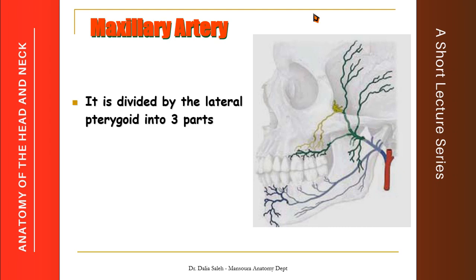Along its course, the maxillary artery is divided by the lateral pterygoid muscle into three parts: first part, second part, and third part. It has almost 15 branches — five from each part — and one terminal branch.